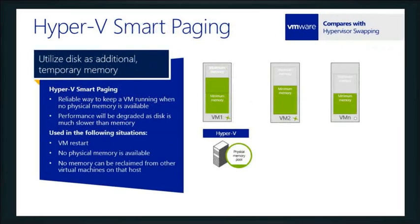Smart paging is all about when to use memory versus actual hard drive space. There are going to be times when you've given a virtual machine a certain amount of RAM and it's not using all of it, but there are requests that need to leverage that RAM. It's Hyper-V's way of saying, for this particular access, I can move this down to page file or disk while that request is being used. But the minute that VM says it needs that memory back, it gets it back — very similar to what hypervisor swapping does in VMware.